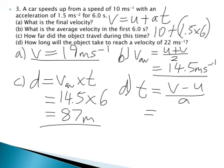And plugging the numbers in, we've got 22 minus 10, divided by 1.5. Which gives us 12, divided by 1.5.